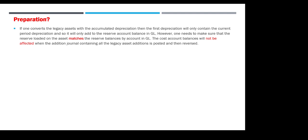If you upload with accumulated depreciation, you tell the system not to calculate the accumulated depreciation because you already uploaded it. If you upload without accumulated depreciation, you tell the system to calculate the accumulated depreciation from the date of service of the assets until the current period or the first period of your asset book. When converting with accumulated depreciation, the first depreciation run will only contain the current period depreciation, adding only to the reserve account balance in GL.